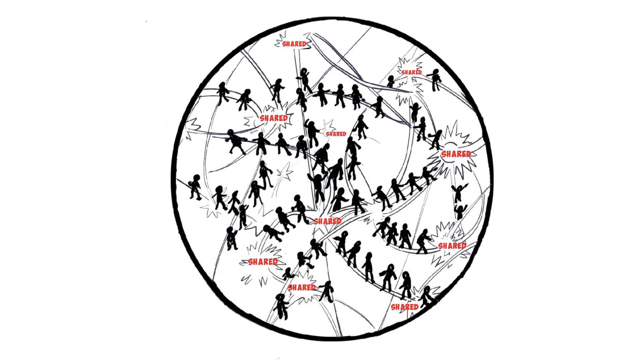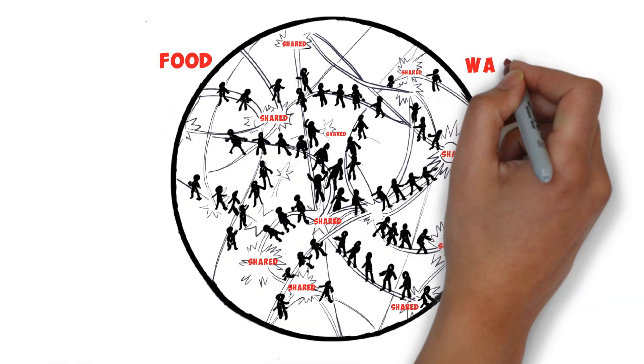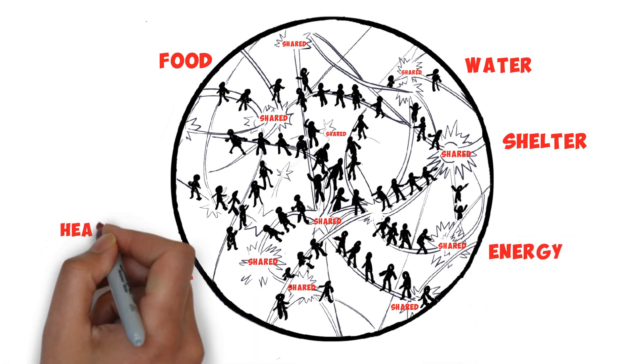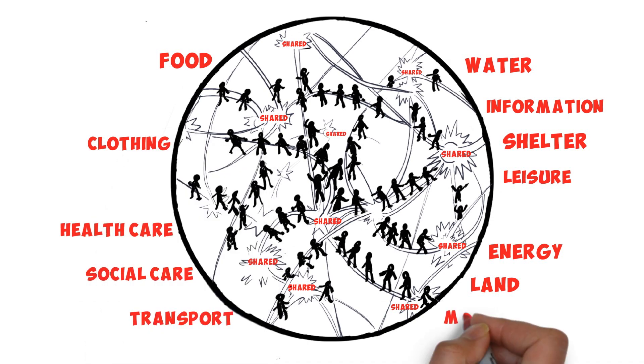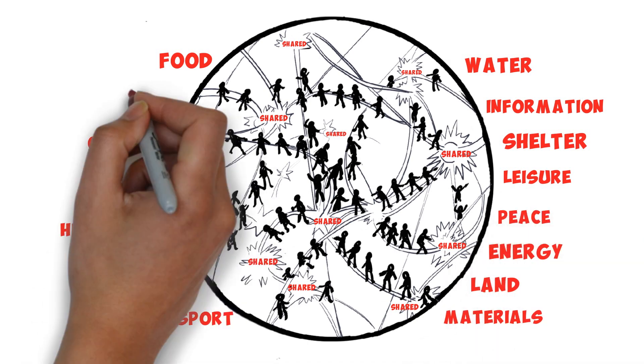This social system will be one in which goods and services are produced voluntarily and made freely available to us all. Wealth will be created directly to meet our needs and not for the profit of a few.